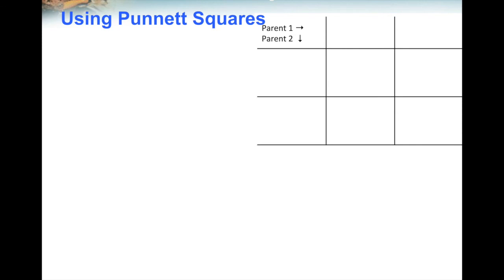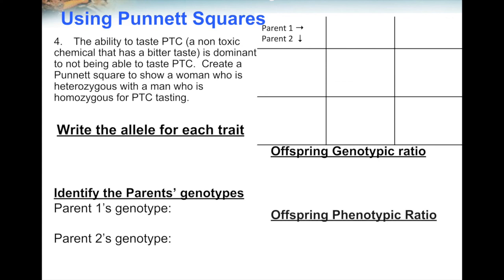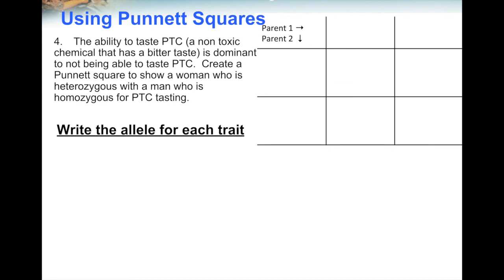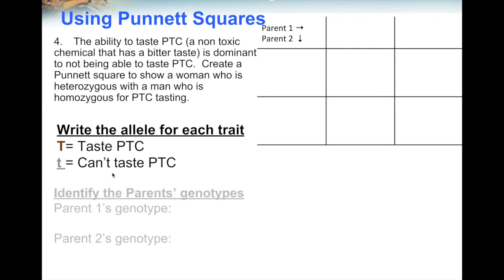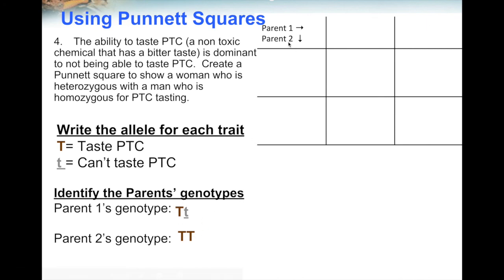Now try this problem on your own. The ability to taste PTC is dominant to not being able to taste PTC. Create a Punnett square for a woman who is heterozygous and a man who is homozygous for PTC tasting. Capital T is for tasting PTC since it's dominant; lowercase t is for can't taste PTC. The woman is heterozygous, so she has capital T and lowercase t. The man is homozygous for tasting PTC, so both his alleles are capital T.